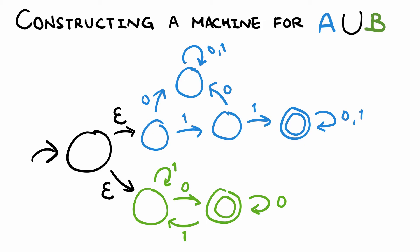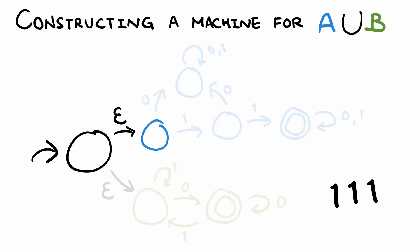Recall that NFAs will accept the string as long as there is one possible path that leads to an accept state. So notice how it accepts 111, which belongs in A, or it can accept 00, which belongs in B.